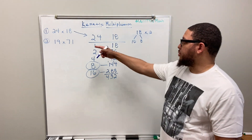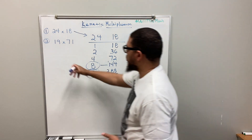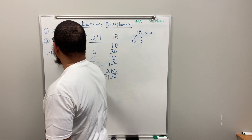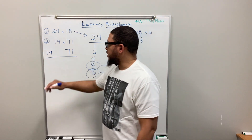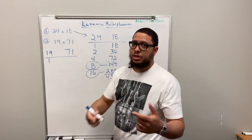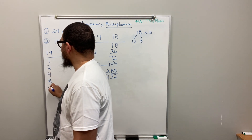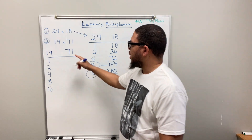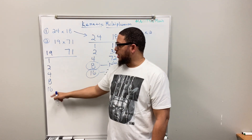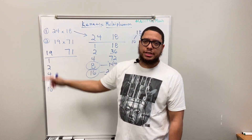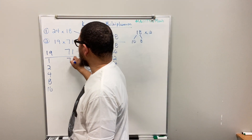Now let's jump into another example: 19 times 71. I'll write 19 and 71 with a horizontal line underneath. Under 19, we start with 1 and keep doubling: 1, 2, 4, 8, 16. Stop there — remember, 16×2=32, and 32 is bigger than 19, so I stop at 16.